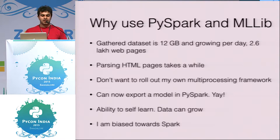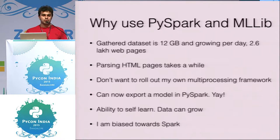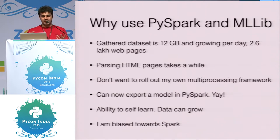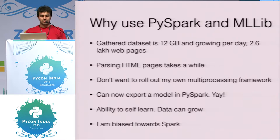For this experiment, I gathered about 12 gigabytes of web pages. Parsing HTML and extracting features for every single page is painful. With 250,000 web pages and 5,000–10,000 being added every day, you quickly realize why you need a cluster computing engine like Spark rather than just writing a for loop. I also didn't want to roll out my own multiprocessing framework — that's reinventing the wheel.